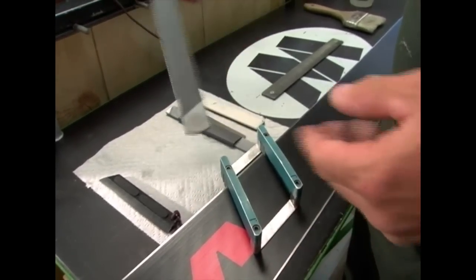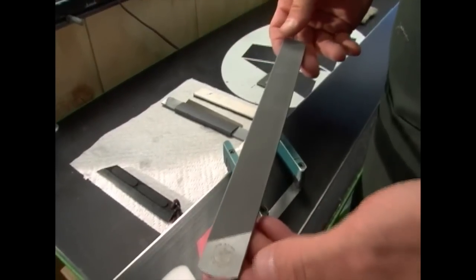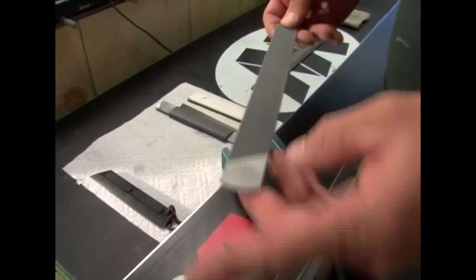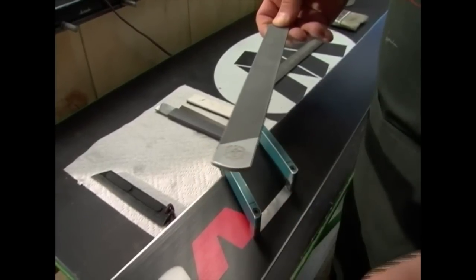The file that I use is a medium chrome file. It's 13 teeth per centimeter, and I always want to make sure that the tang of the file or the round edge of the file is pointing away from the edge that I'm working on.